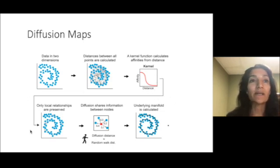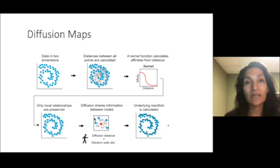A key property of affinities is that mainly the local relationships are preserved. In diffusion maps, we have an additional step.